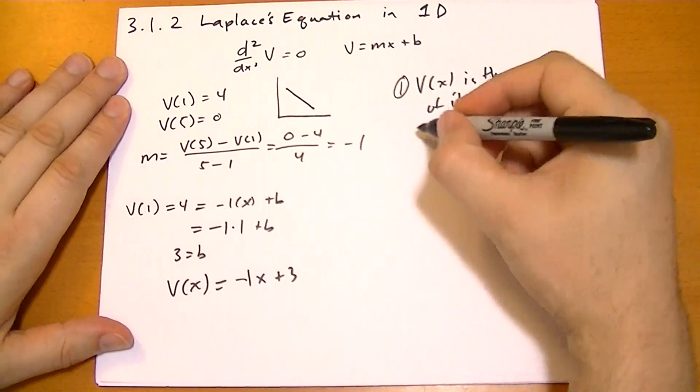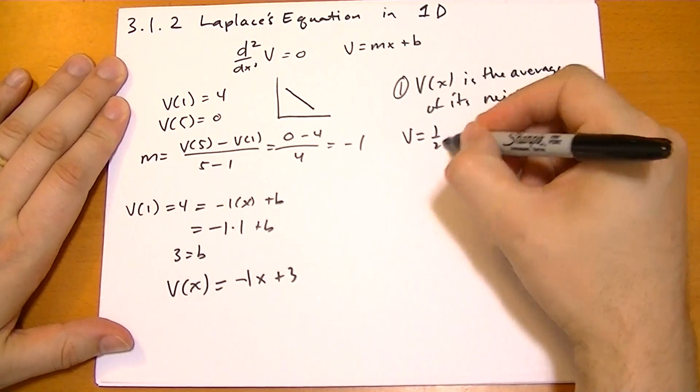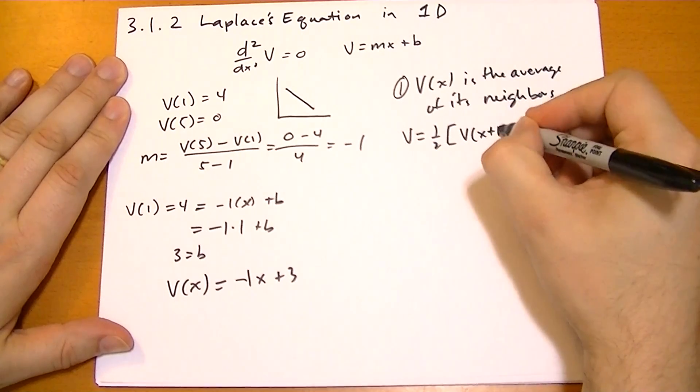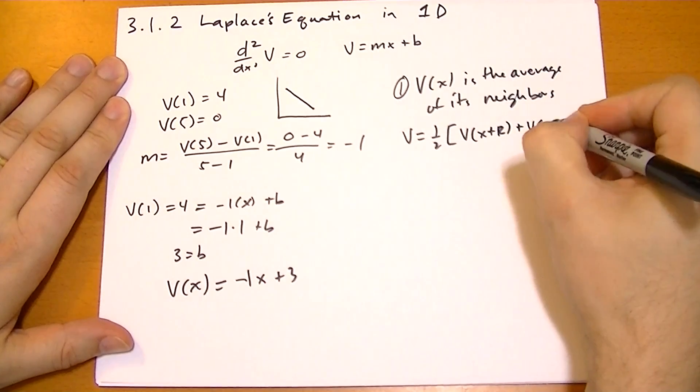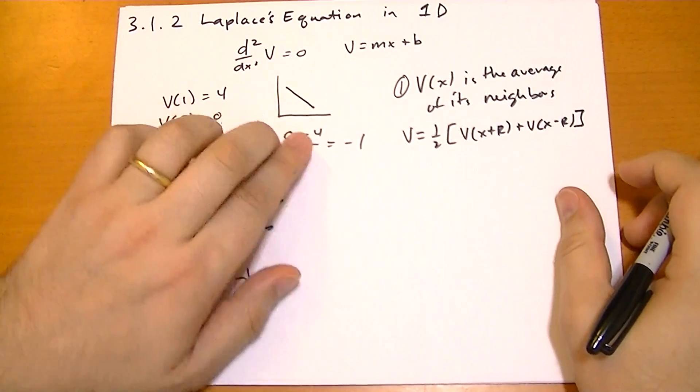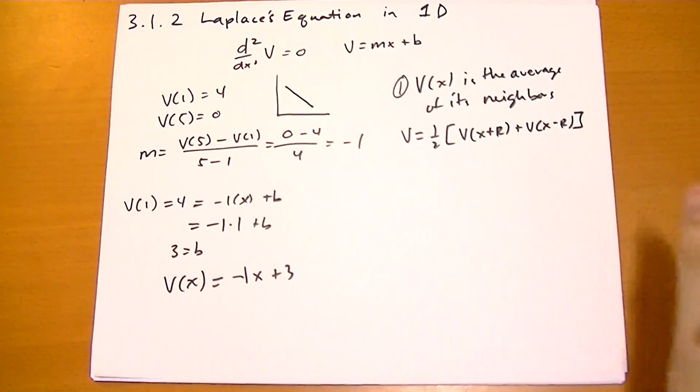So we can express this as V is equal to 1/2 [V(x+r) + V(x-r)]. Okay. So we just basically take a point and go the same distance either way and take the average and that's going to be the potential at that point.